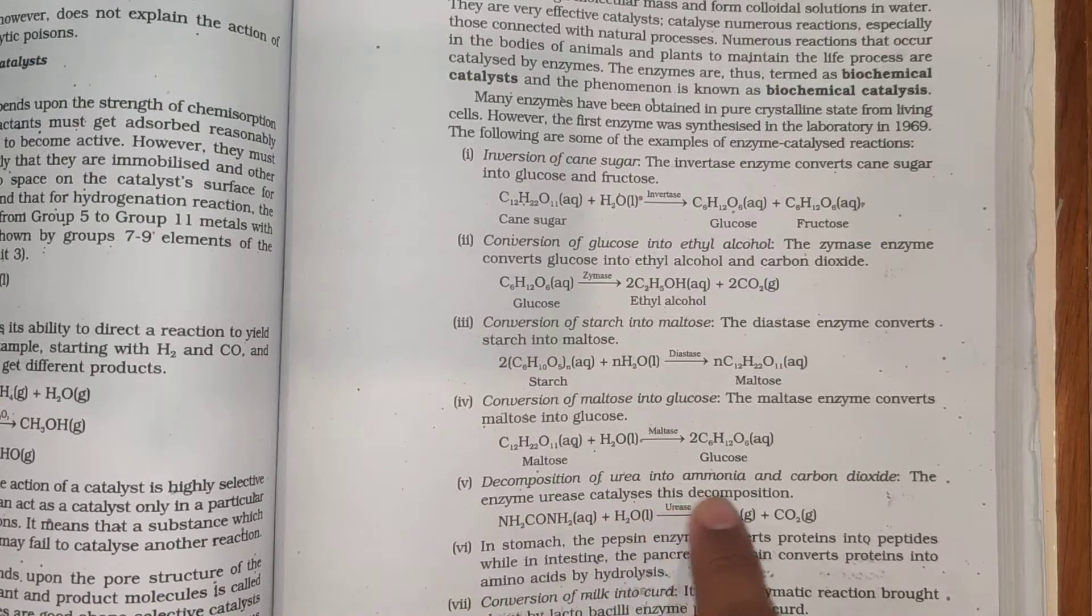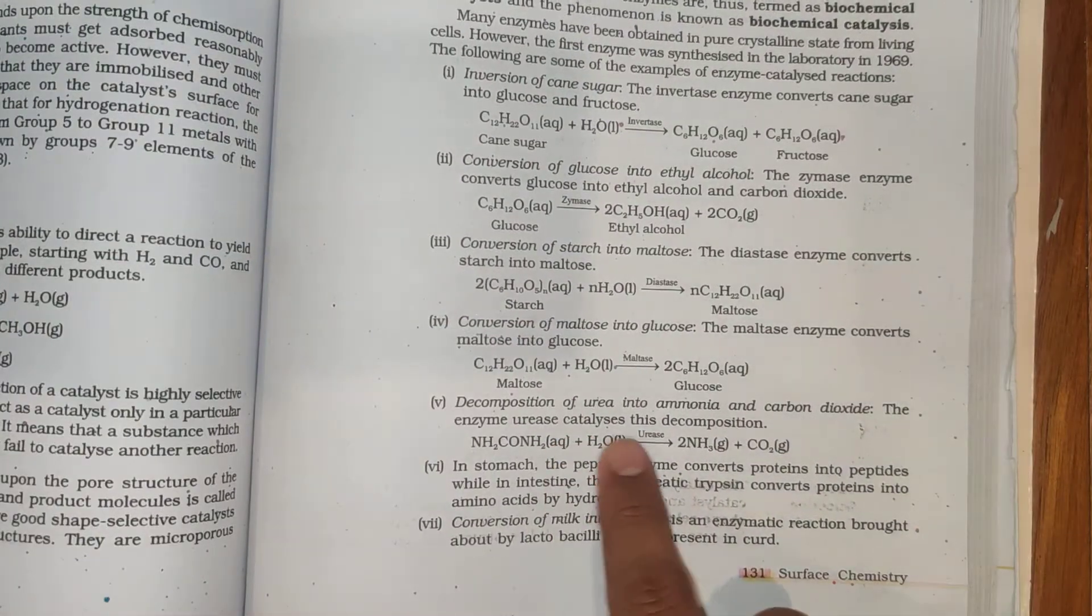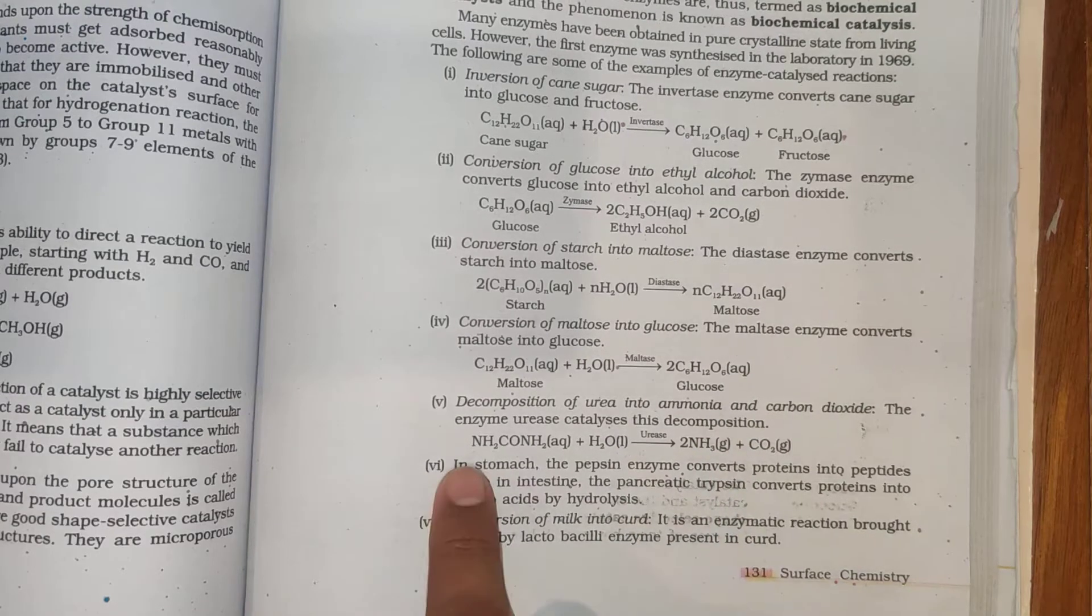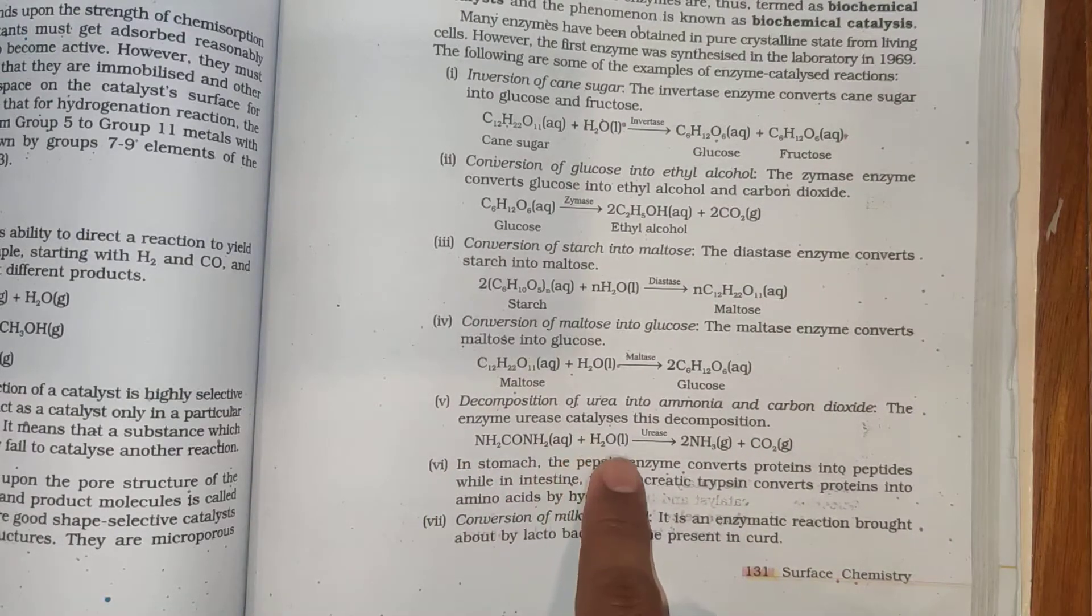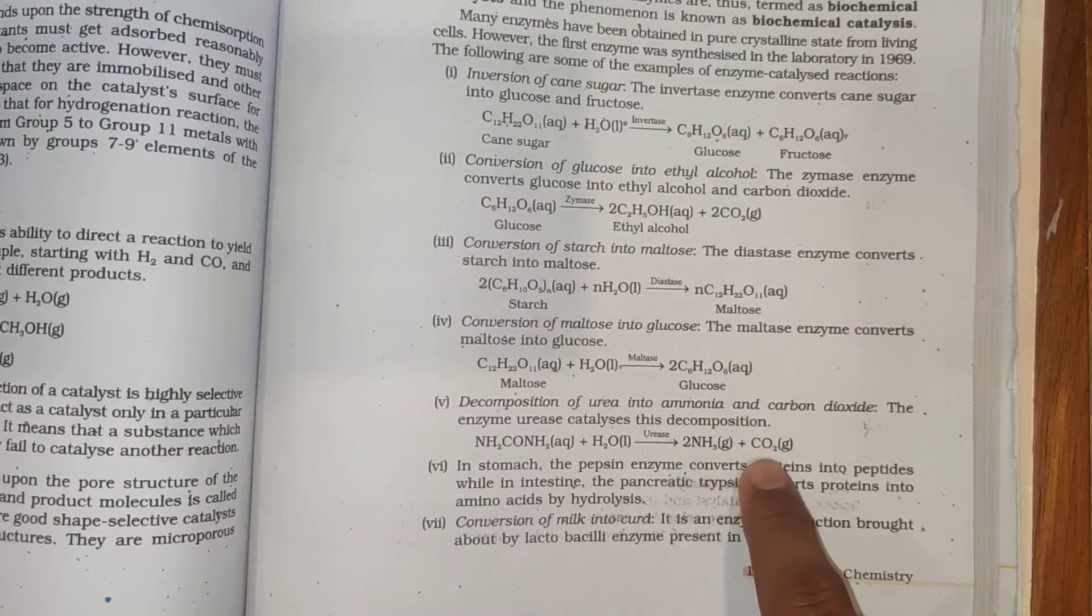Decomposition of urea into ammonia and carbon dioxide: The enzyme urease catalyzes this decomposition. NH2CONH2 (aqueous) plus H2O in presence of urease forms 2NH3 plus CO2.